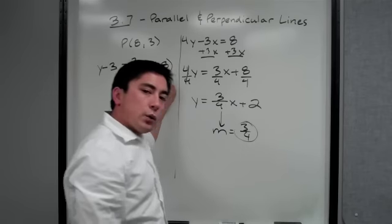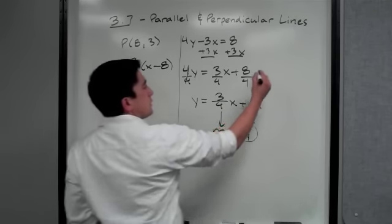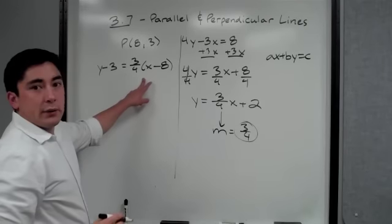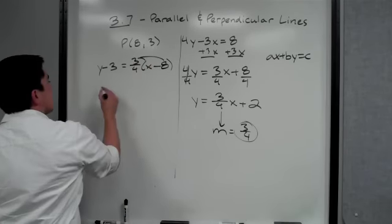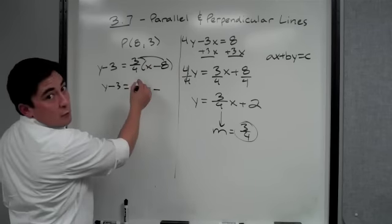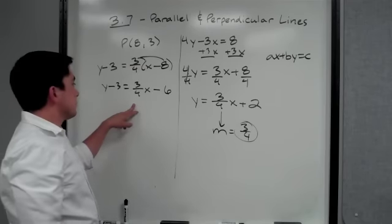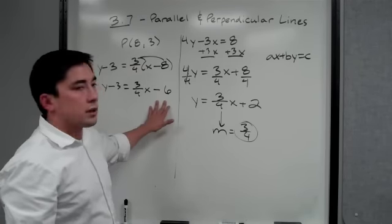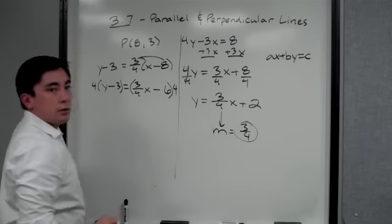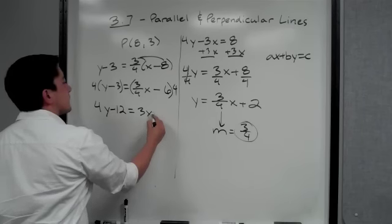Remember, the problem says to write the answer in standard form: ax plus by equals c. So we need to distribute and get rid of the parentheses. We get y minus 3 equals three-fourths x minus six. We don't like fractions, so we multiply everything by the common denominator, four, on both sides. That gives us 4y minus 12 equals 3x minus 24.